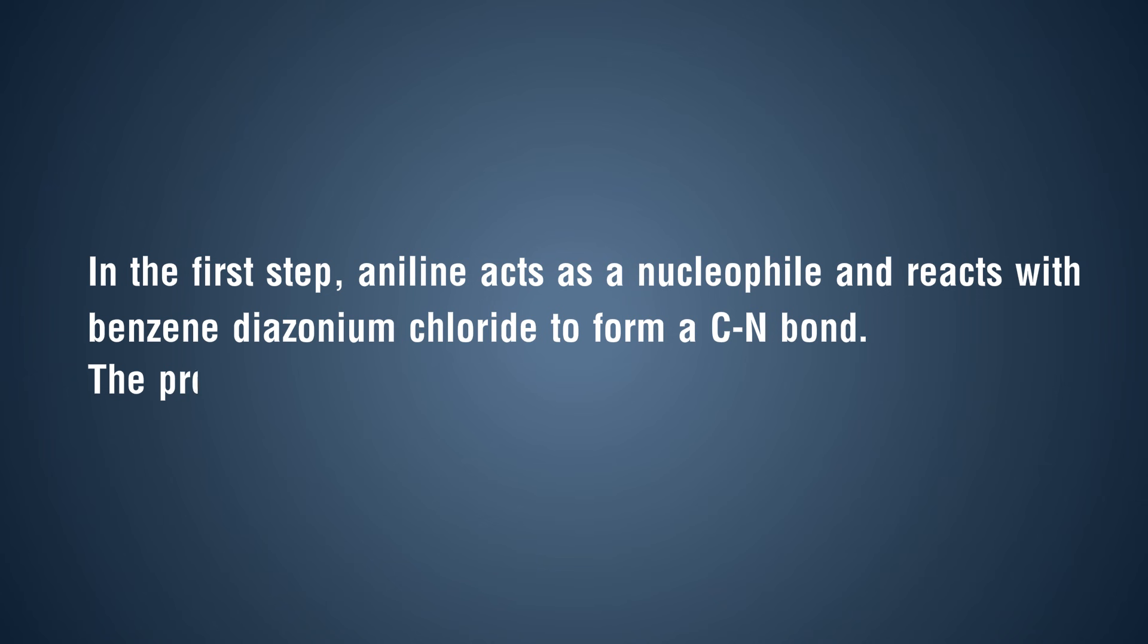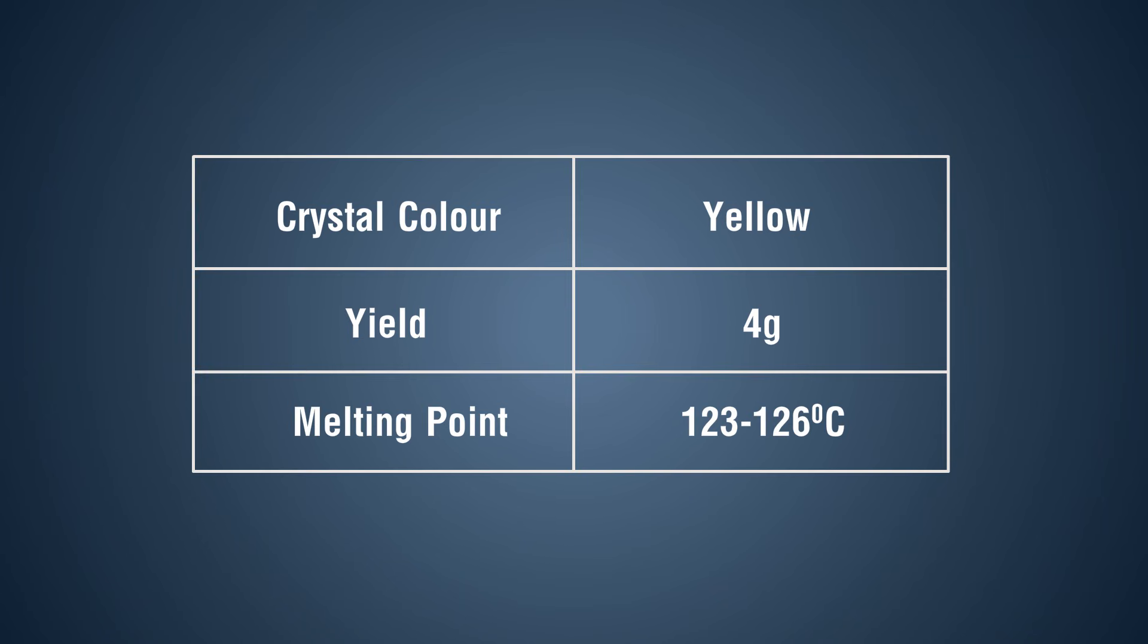Observation table: Crystal color: yellow. Yield: 4 grams. Melting point: 123 to 126 degrees Celsius. Result: The yield of aniline yellow is 4 grams.